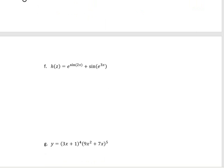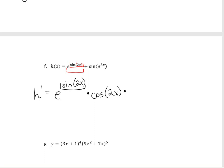Let's also do e raised to the sine of 2x. When we take the derivative, first the outside: the derivative of e to the anything is e to the anything — leave the inside alone. Then move to the next inside: the derivative of sine is cosine, leave that inside alone. Then don't forget the third inside: the derivative of 2x is 2.